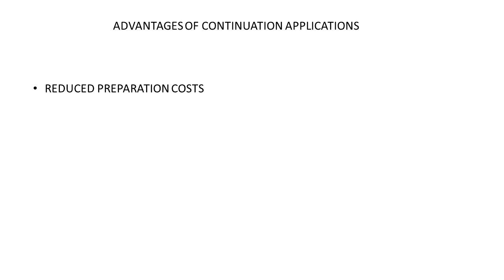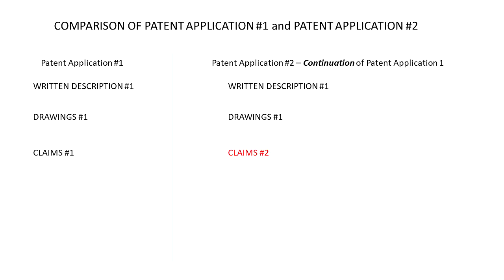Now here are some advantages of doing this. Firstly, the preparation costs for the continuation application are typically much lower than for the original patent application. Why is that? Well, if you hired a professional to make your original patent application, they had to do the written description, the drawings, and the claims. For this new continuation application, the only thing that needs to be made new is the claims — the drawings and written description are reused from the previous application.